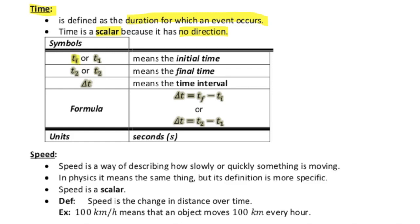But we do have our initial time, our final time, and our change in time. So our change in time is equal to the final minus the initial time, or t2 minus t1. And to give you an example of something like that,